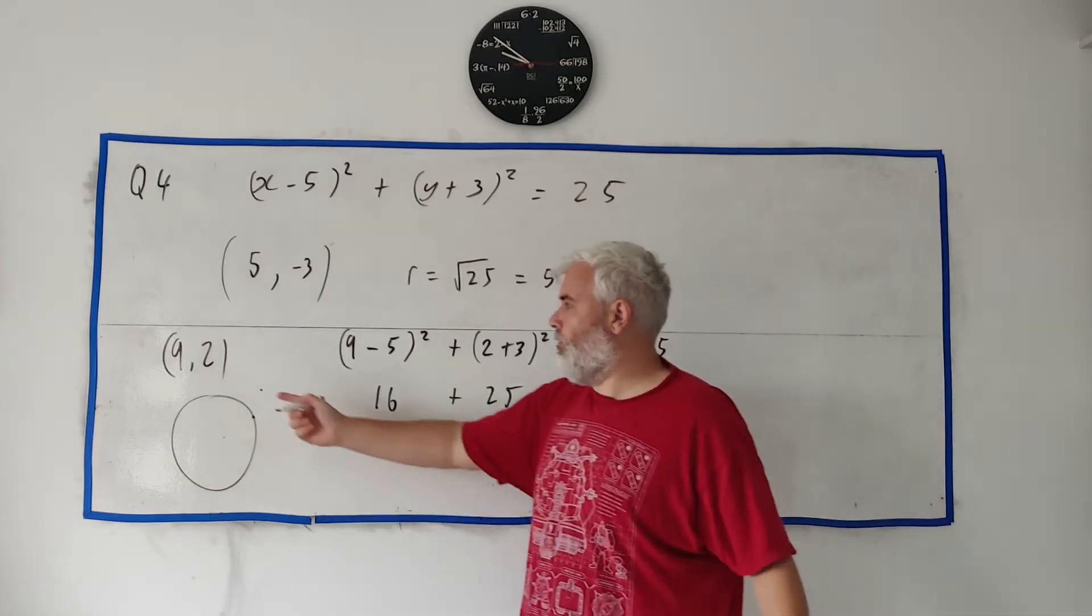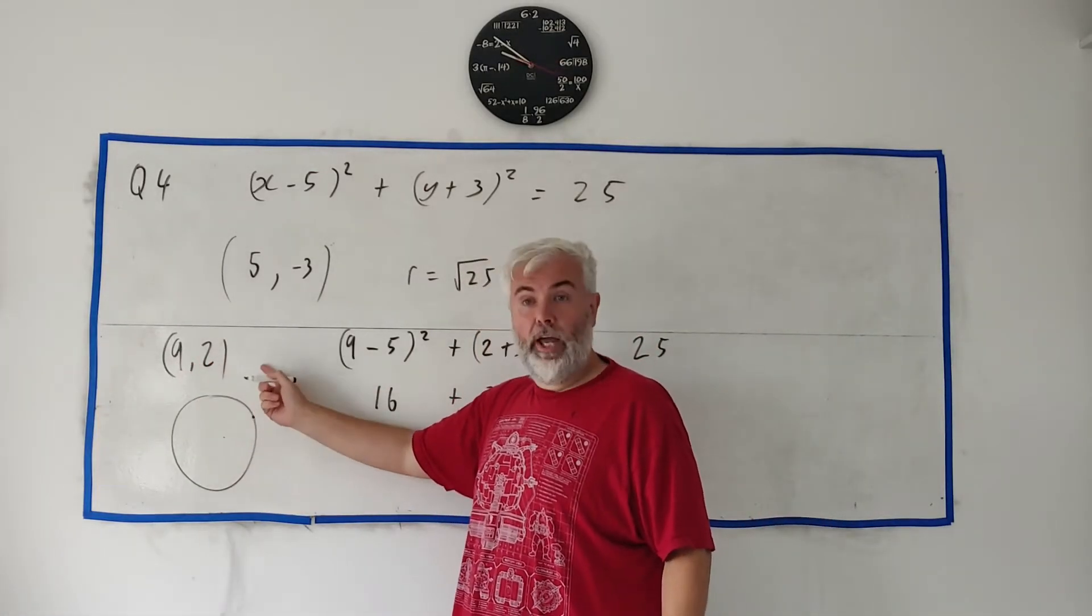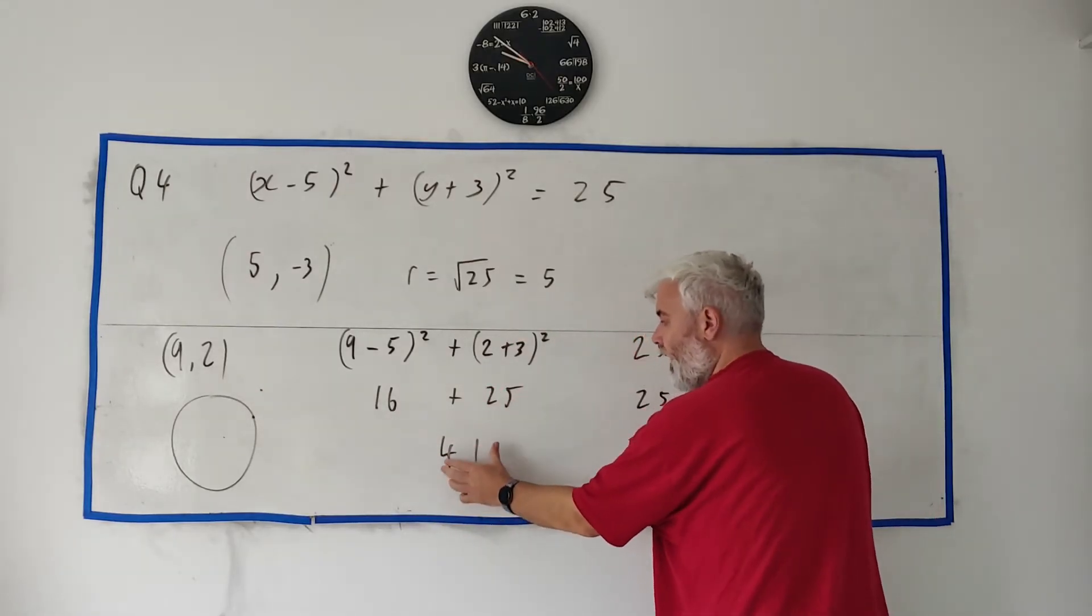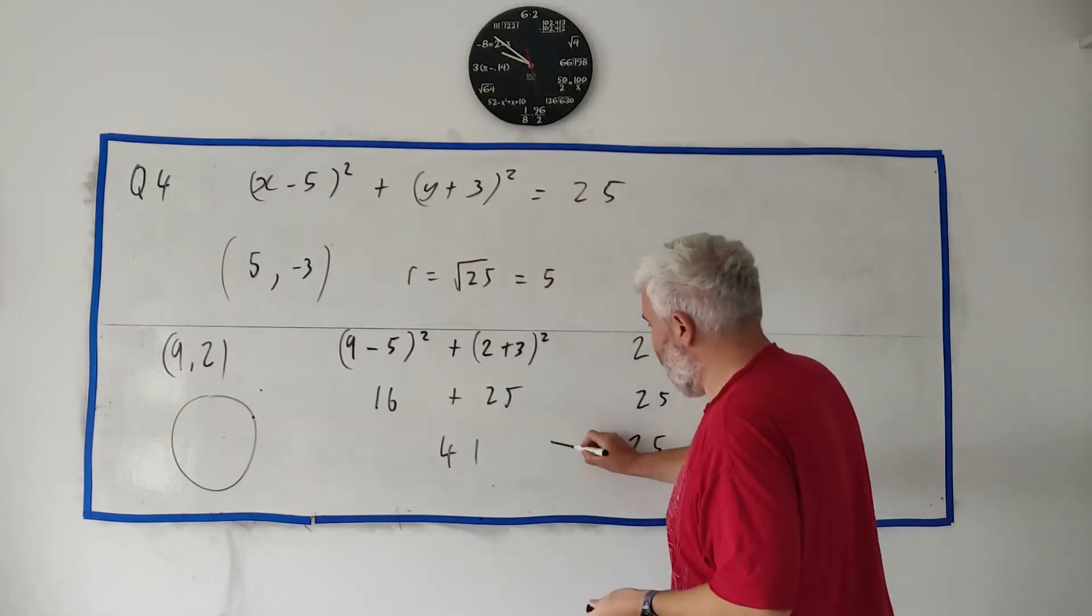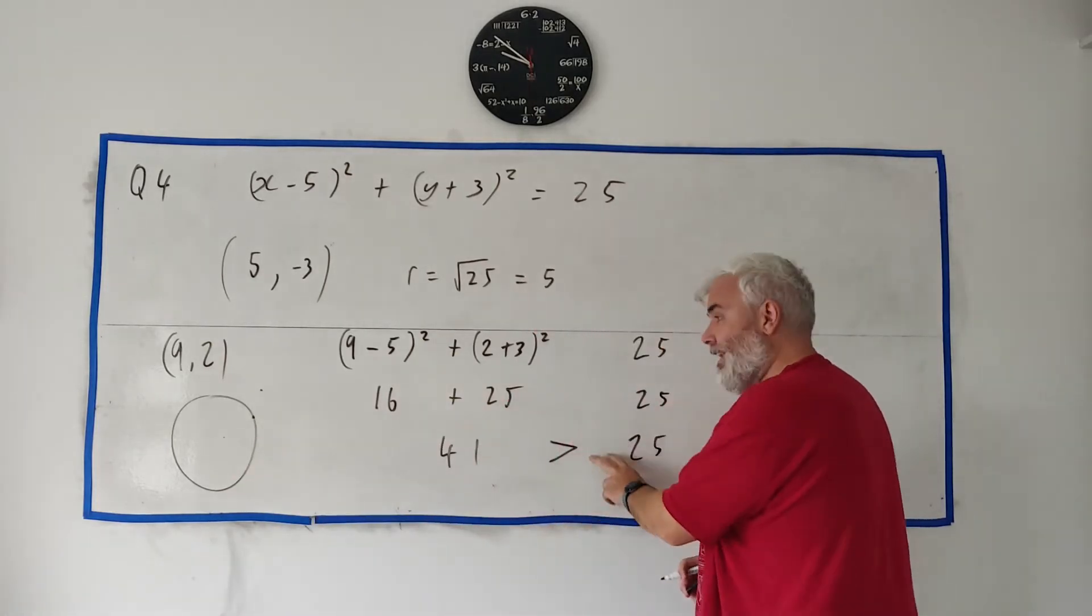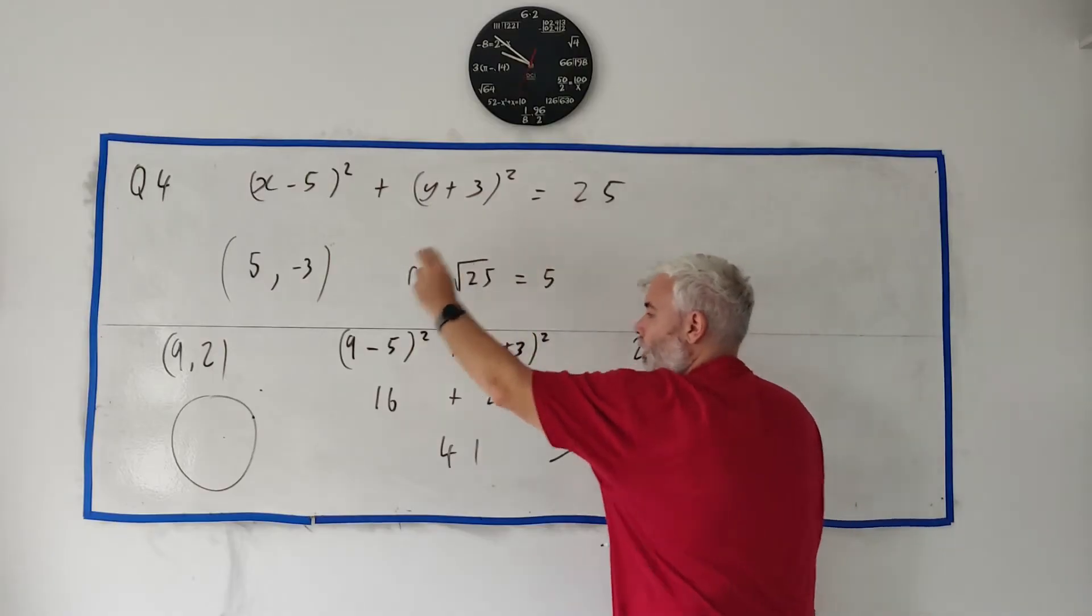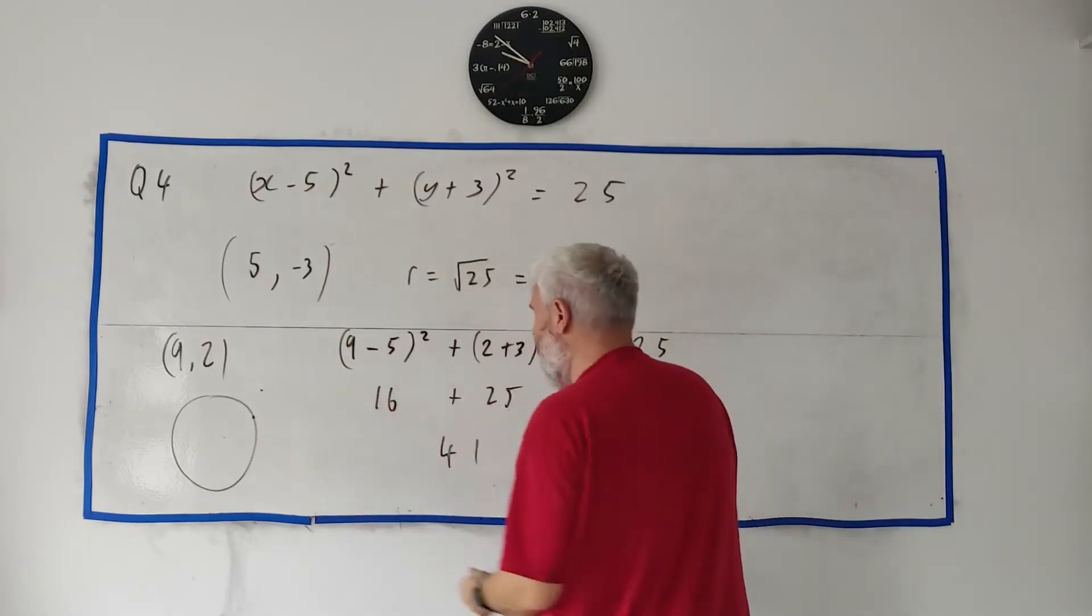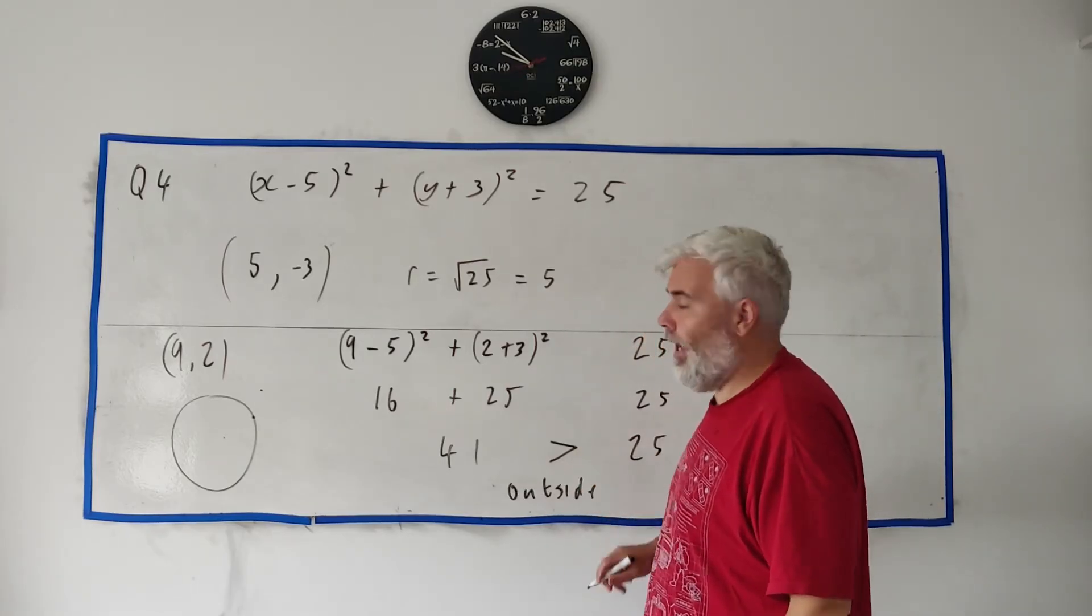So the question is 41. So let me go back a bit first. The point can be inside, on or outside. The number we get over here can be less than, equal to or bigger than. In this case, it's bigger than. And that tells us what the case is. If it's less than, it's inside. If it's equal, like it was up here, it's on. And if it's greater than, it's outside. So in this case, the answer is outside. So you tick the box that says outside.